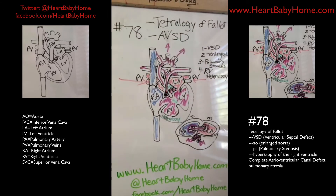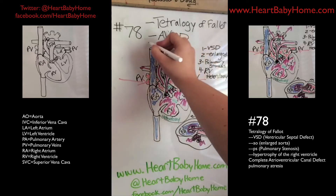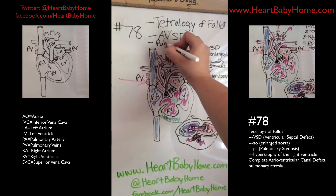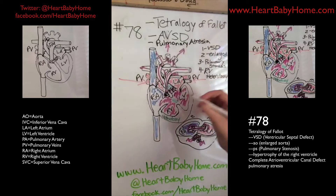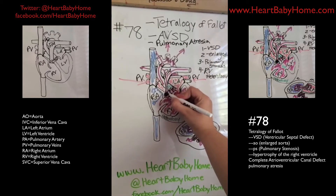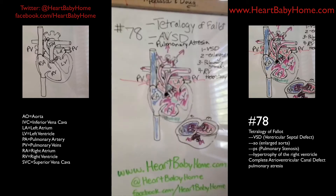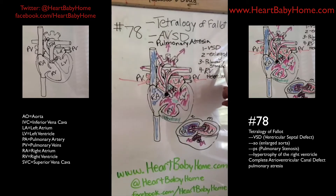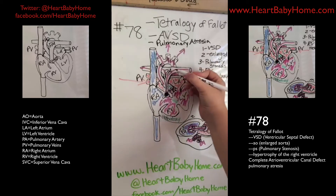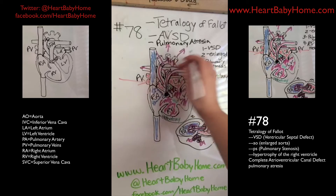One more detail: this heart also has pulmonary atresia. That's where the pulmonary valve is completely blocked so that blood can't get out of the right ventricle through the pulmonary artery at all. That is not part of the Tetralogy — Tetralogy involves stenosis, which is narrowing, not full blockage.